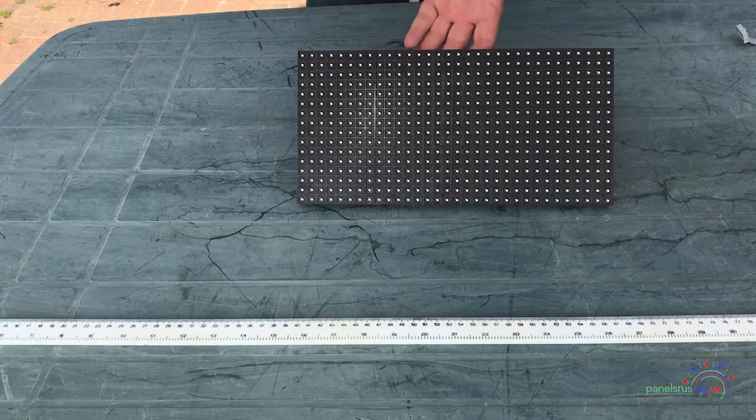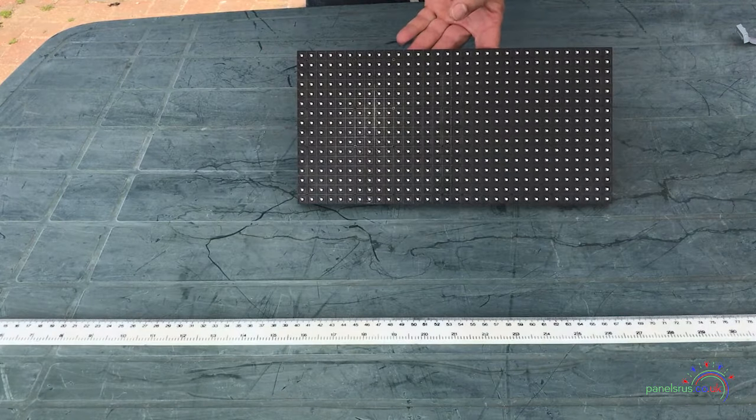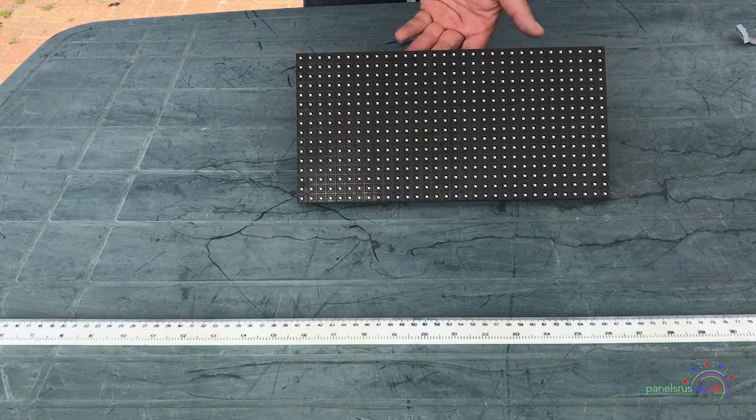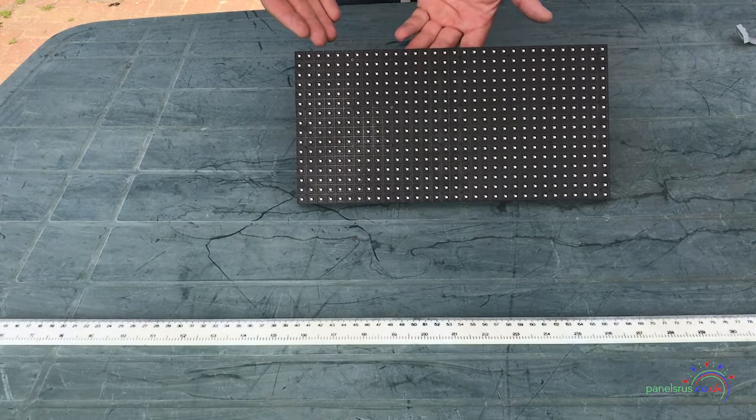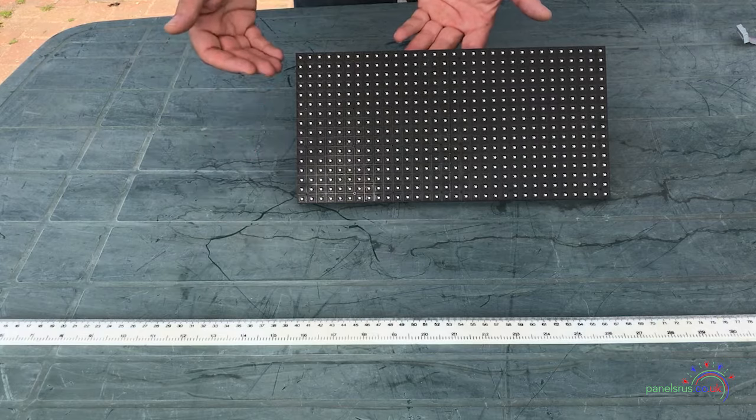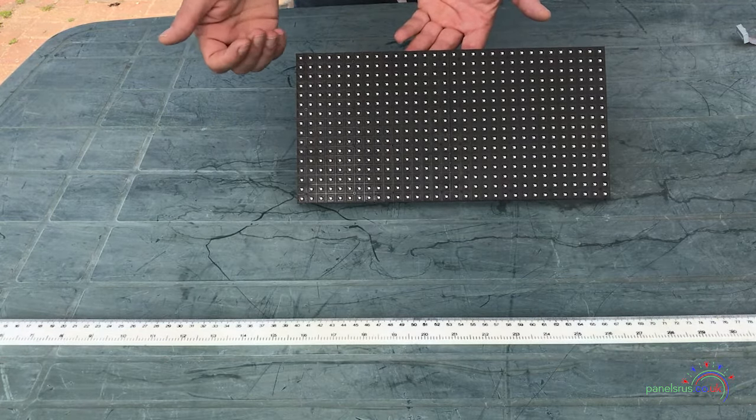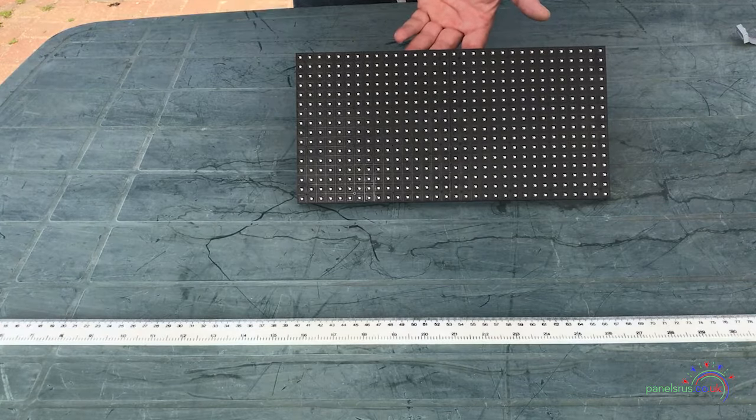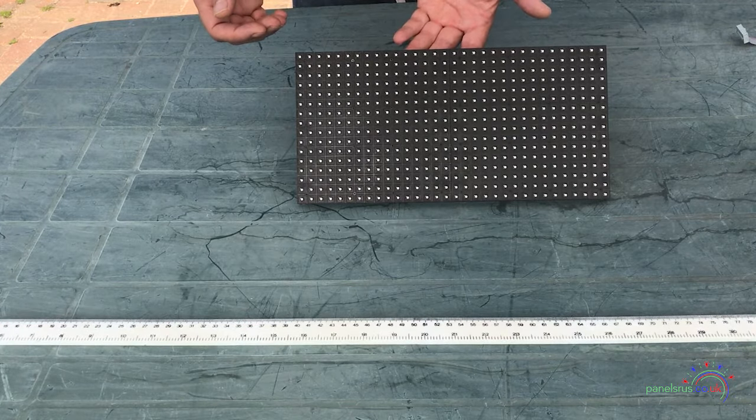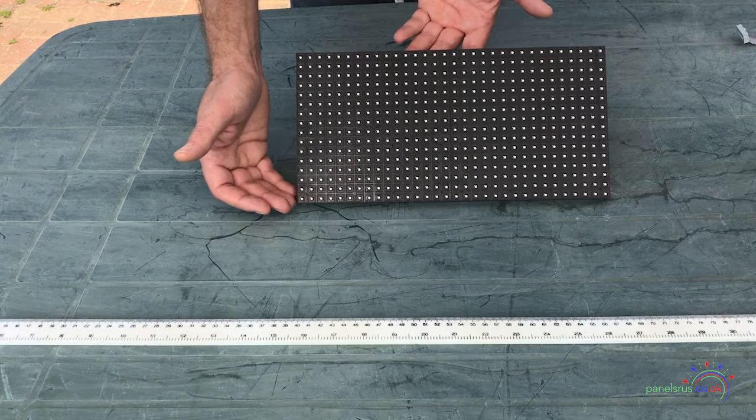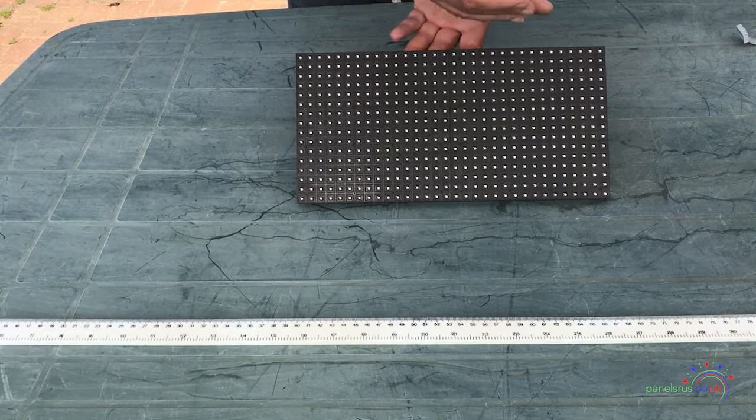Probably the most common panel used in DIY Christmas lighting is the P10. This is an example of a P10 panel. As you can see the 10 in the P10, in fact the number in the P numbers, refers to the number of millimeters between centers on the pixels. So this is a P10, pixels are spaced at 10 millimeters both vertically and horizontally.